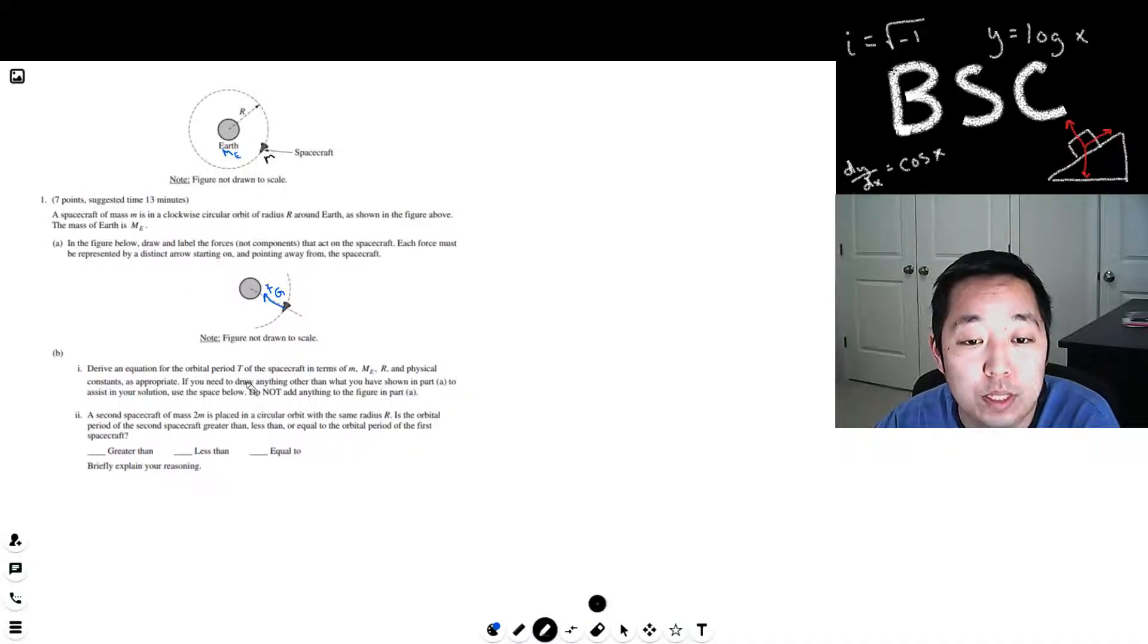Now derive an equation for the orbital period T in terms of these constants as appropriate. If you need to draw anything other than what you've shown in Part A to assist your solution, use the space below, do not add anything to the figure. All right, so we know that this is a centripetal force, right? There's a net force on the spacecraft, it's pulling it to the center. If the spacecraft had no velocity already, it would be falling towards the Earth or accelerating. But it has a velocity because it's going in a circle.